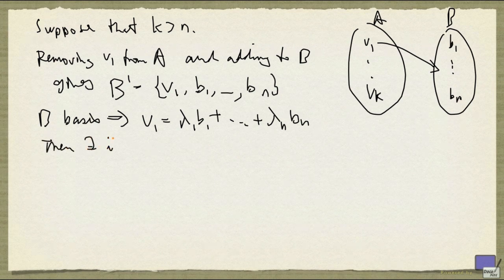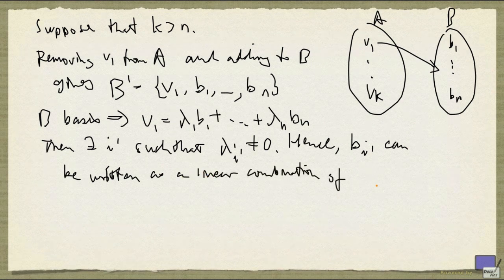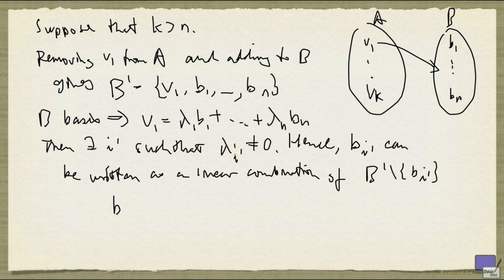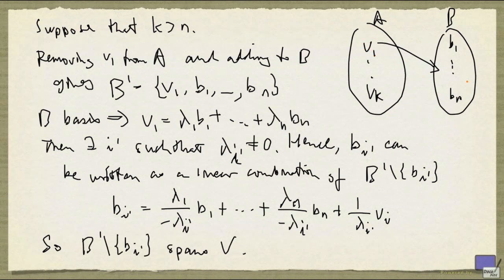There exists some index i' such that lambda i' is non-zero. That means the corresponding basis vector Bi' can be written as a linear combination of the remaining vectors in the new set B'. So we can remove Bi' from B' and obtain another set that still spans V. Thus V1 is now moved into the basis, and Bi' is gone. We can reorder things so that B1 is the one removed. The next step is to move V2 into this set, and we will be able to find another basis vector to remove — specifically one from among B2 up to Bn. This uses the fact that A is a linearly independent set: V2 can be written as a linear combination involving these elements, and at least one scalar attached to a B vector must be non-zero, because otherwise V2 would be a scalar multiple of V1, contradicting that A is linearly independent.